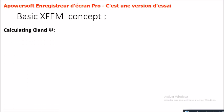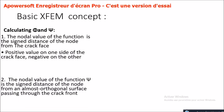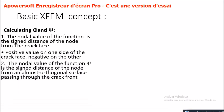To calculate the two parameters phi and psi, the nodal value of phi is the signed distance of the node from the crack face — positive on one side, negative on the other. The nodal value of psi is the signed distance of the node from an almost orthogonal surface passing through the crack front. The function psi has zero value on this surface and is negative on the side towards the crack.